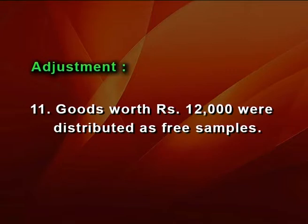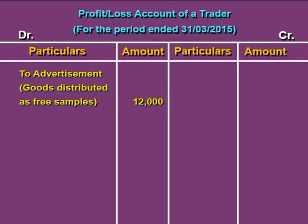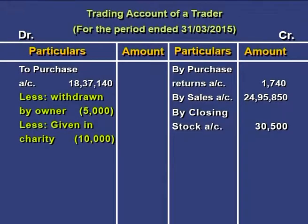Next: goods worth Rs 12,000 were distributed as free samples. Free samples are a kind of advertisement expense, which is an indirect expense. So the first effect is Rs 12,000 is shown as an indirect expense on the profit or loss account under advertisements or goods distributed as free samples. The second effect: Rs 12,000 is deducted from the value of purchases in the trading account.